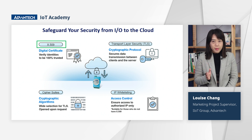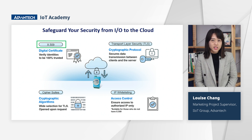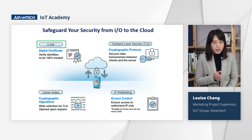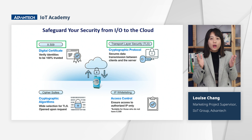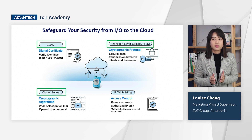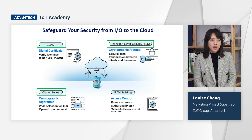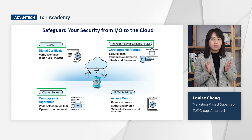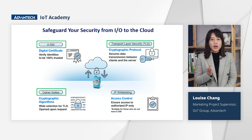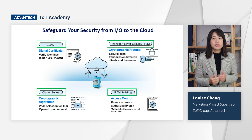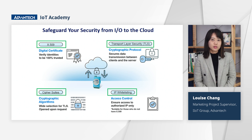Once device trust is established, TLS safeguards device communications, encrypting and decrypting data with an extensive selection of Cipher Suites to prevent unauthorized access. New Cipher Suite support can be incorporated upon request. Additionally, we implement stringent access control measures including IP whitelisting to guarantee that only authorized IPs gain access.